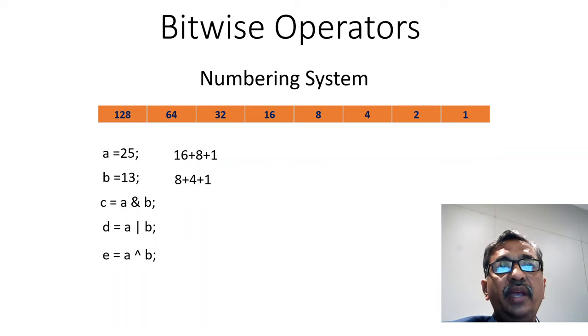Now C is equal to A and B. We have to consider only common numbers. 8 is common and 1 is common. So 8 plus 1 is 9 in AND operation.